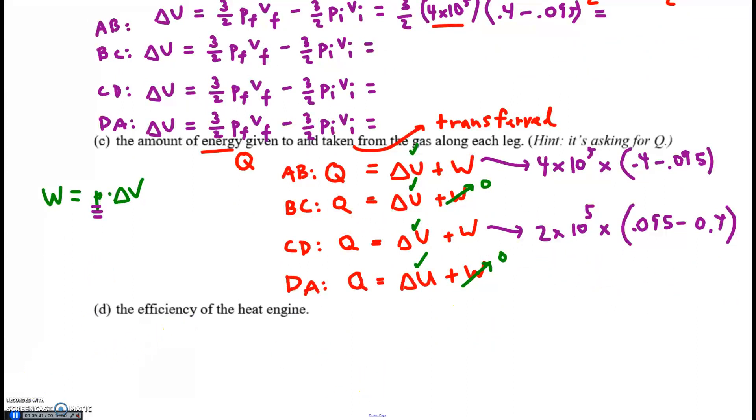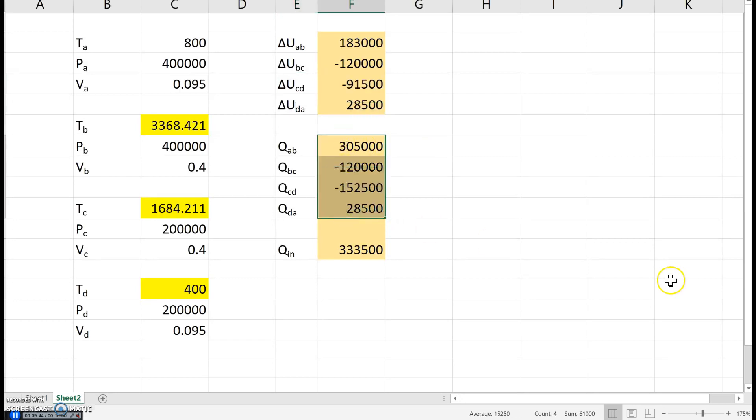When you get your answers, they should come to this. Some of these Q's are positive, some are negative. So what's the energy put into the system? It's the sum of the positive Q's. These two together give us the total energy, the heat energy transferred to the gas as part of the heat engine. Some of that energy is wasted and removed as waste heat at the end. The rest becomes useful work.